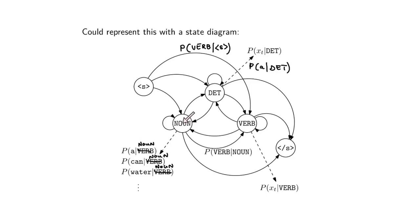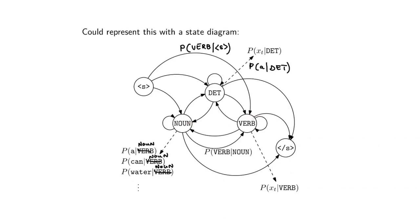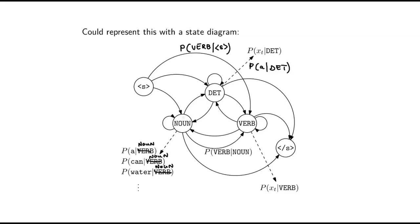What makes it a Markov model is the Markov assumption: when I'm in a state and want to generate a word, I don't have to look back to the start of the sequence — I only need to know which state I'm currently in. Similarly, when moving from one state to another, I don't need to know the whole sequence I went through to get here; I only need to know I'm currently in 'verb' to decide where to go next. A Markov assumption means we only need to look back a finite number of steps into the history in order to figure out what to do now.